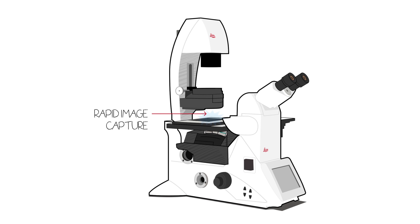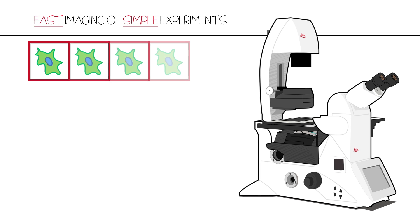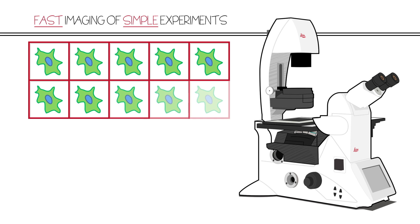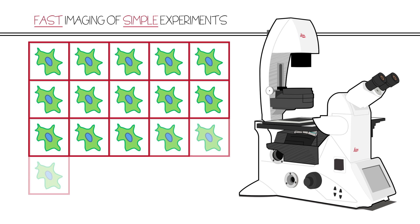Capturing the dynamic processes in living cells requires a microscope system that can image rapidly. For simple experiments, rapid imaging can be controlled by a fast camera or a real-time controller.